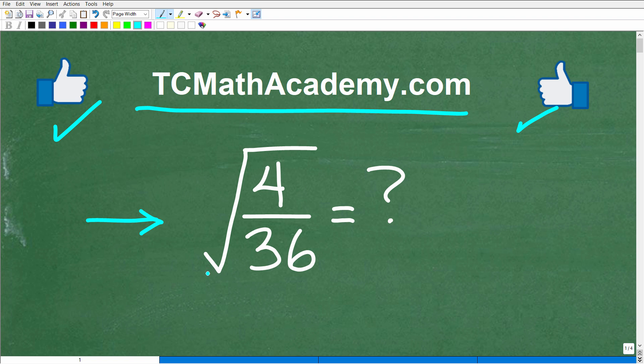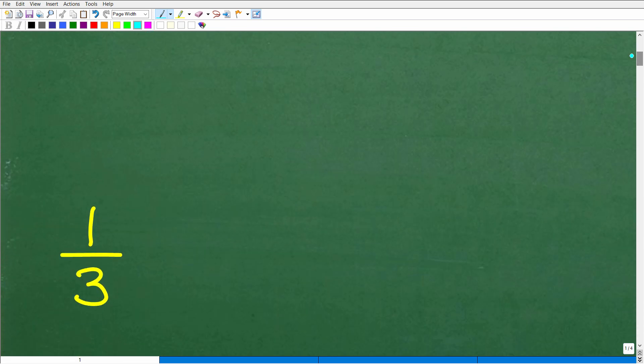All right, let's go take a look at the answer. Again, we don't want to use a calculator. The square root of 4 over 36. What is the correct answer? Well, here it is right here. It is one third.